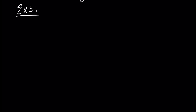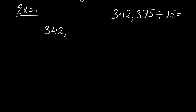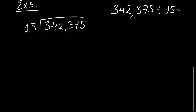Let's give another example, number 3. Example number 3: let's divide 342.375 by 15. This must be quite a long example. How many 15s we have inside 34? Actually we have two 15s, so we write 2. 2 times 15 is 30, so we write minus 30. 34 minus 30 is 4.